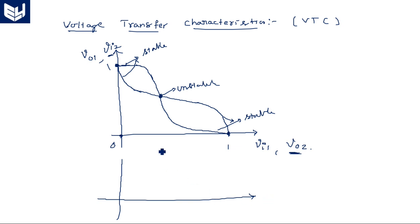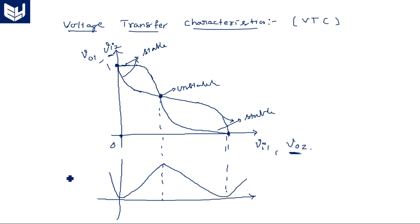Looking at the energy curve: there is one point here, then a low level, another low level. This low level corresponds to a stable state, and the high level corresponds to the unstable transition region. The bistable element has the highest energy during the transition period — during the transition from 1 to 0 or 0 to 1. At the stable states, there is no energy consumption.